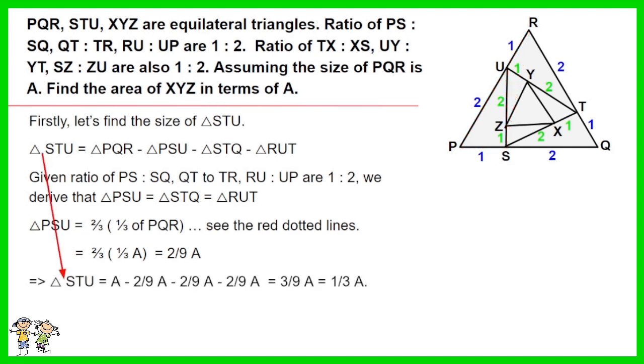As such, triangle STU equals A minus 3 sets of 2 over 9 of A. The result is triangle STU equals one third of A.